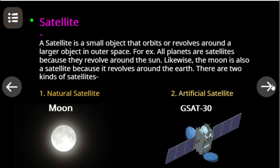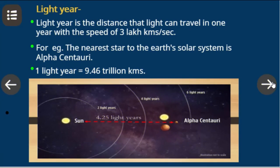A light year is the distance that light can travel in one year with the speed of 300,000 km per second. Our universe is so big that we cannot measure distances in kilometers. For example, the nearest star to Earth's solar system is Alpha Centauri, which is 4.25 light years away from Earth.